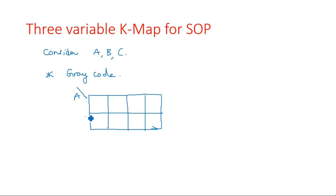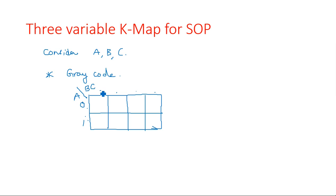In the K-map layout, on the left-hand side there are two places allocated for variable A, which varies as 0 and 1. On the right-hand side, the four places are for two variables B and C. Four combinations come from two variables. The representation uses gray code: 00, 01, 11, 10 — this is the gray code representation for B and C.